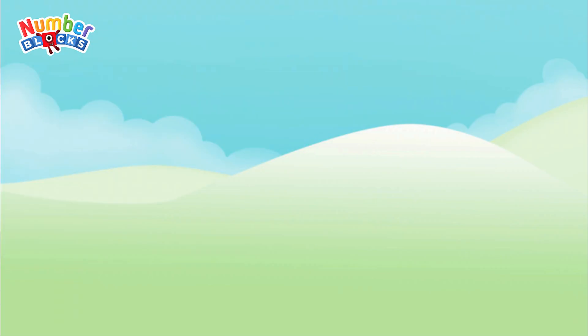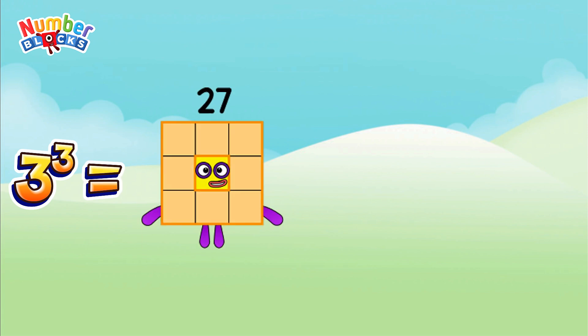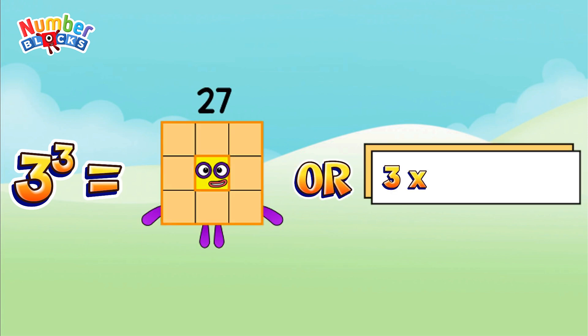3 cubed is equal to 27, or 3 multiplied by 3 multiplied by 3 is equal to 27.